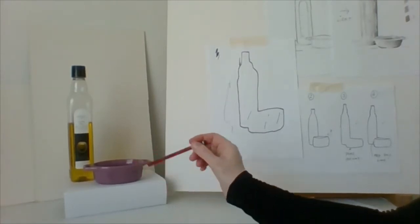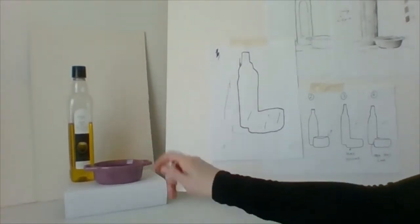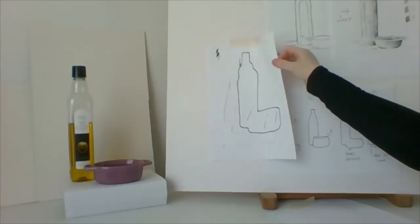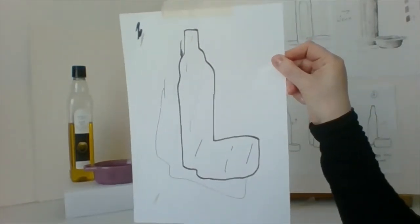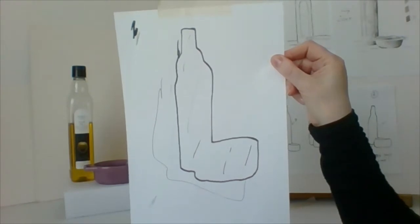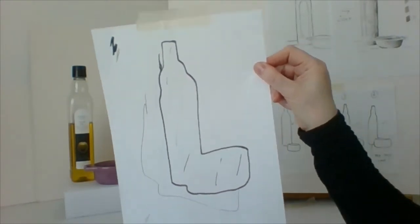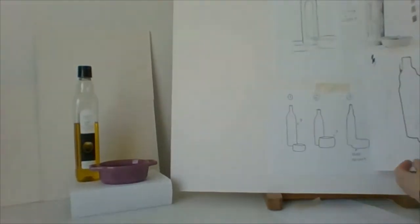So outline drawing is where we assume the whole mass as one thing. So we've got this. I'll show you this. So this is my outline drawing from before. So I've just started at any point, maybe the top of the bottle or the bottom, and I've just really drawn around the whole thing.